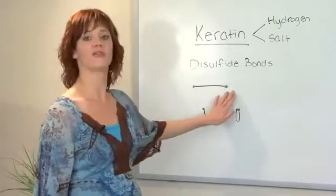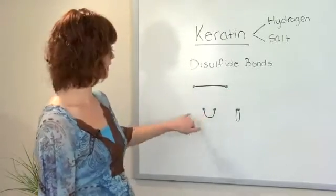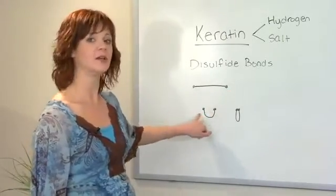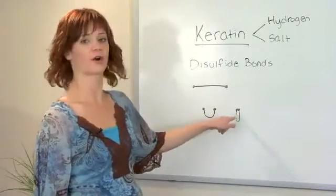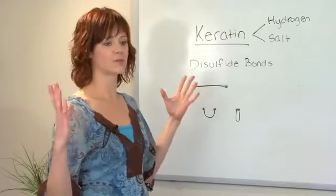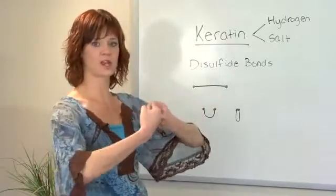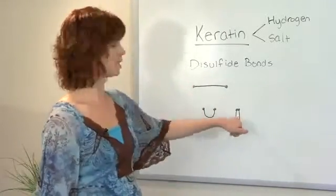If your sulfur atoms are far away from each other, in order to create the bond, they come closer together. The closer they come to meeting and the further apart they were, the kinkier the curl. So for those sulfur atoms to come together, they wind up creating a curl.